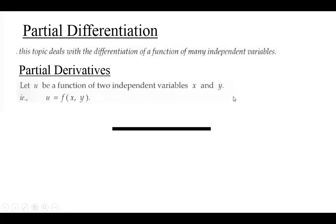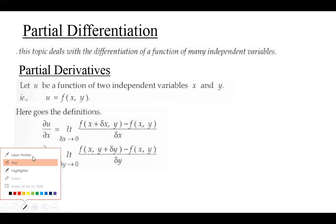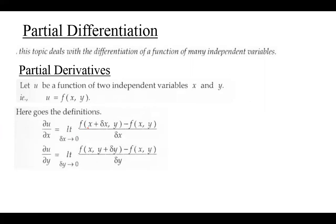How do we find partial derivatives? Let us consider a function u to be a function of two independent variables x and y, represented as u = f(x, y). The definition: ∂u/∂x means the partial derivative of u with respect to x. It is defined as limit delta x tends to 0, f(x + Δx, y) minus f(x, y) divided by Δx. This is the partial derivative of u with respect to x.